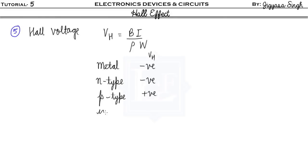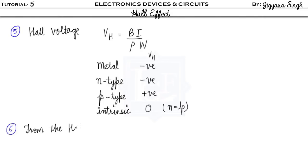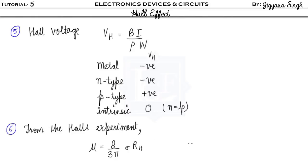For an intrinsic semiconductor, the Hall voltage is zero because n equals p. One more thing that may be asked in GATE is about mobility. From Hall's experiment, mobility μ can be given as (8/3π) times conductivity times the Hall coefficient, which can be approximated as conductivity times R_H because (8/3π) is very close to 1. That's all you need to know about the Hall effect, Hall coefficient, and Hall voltage.